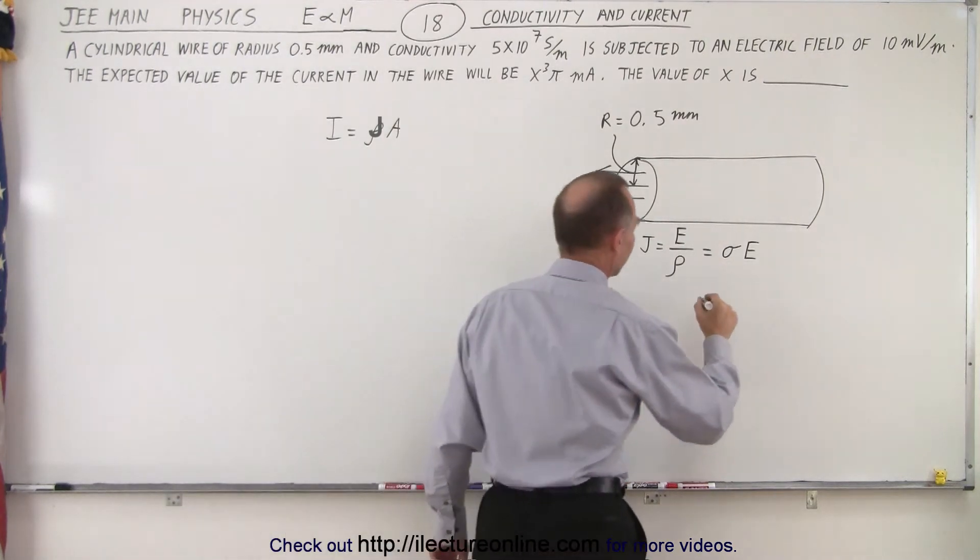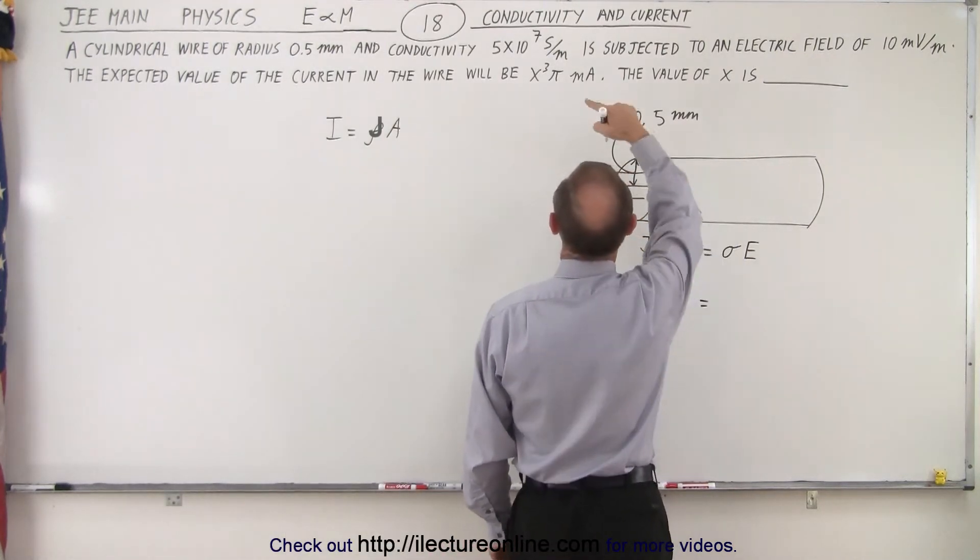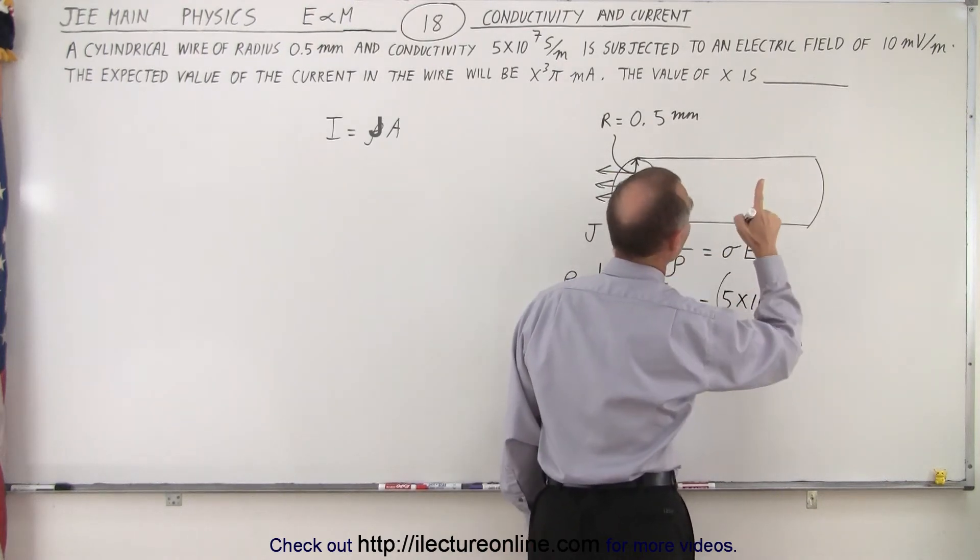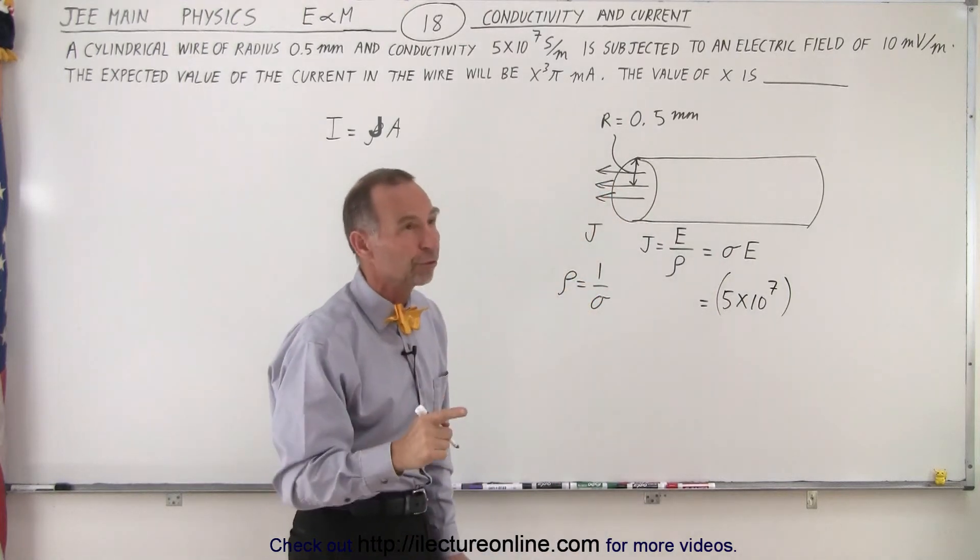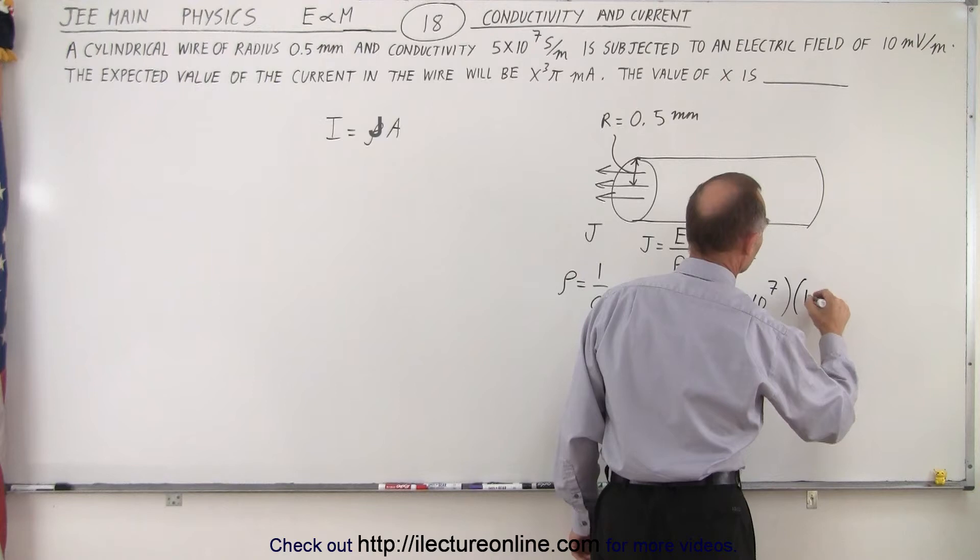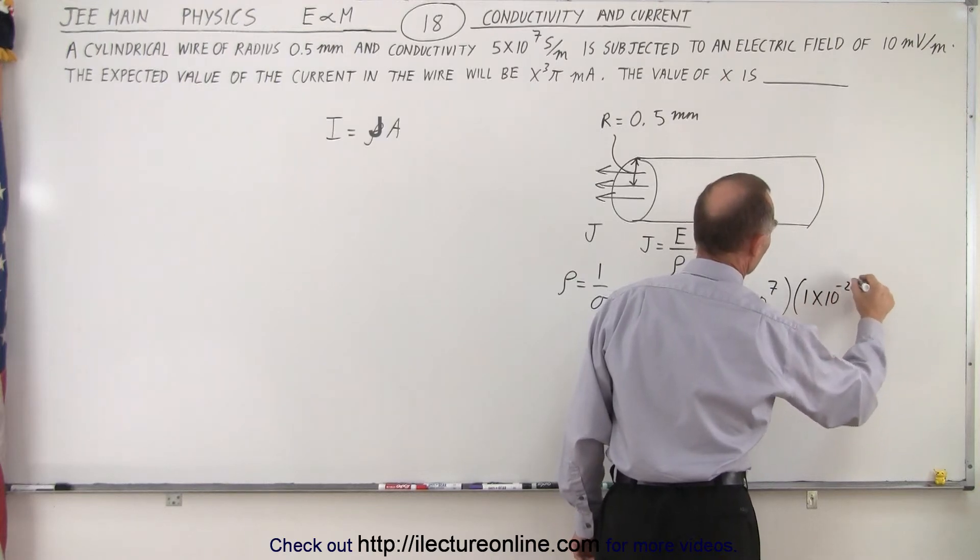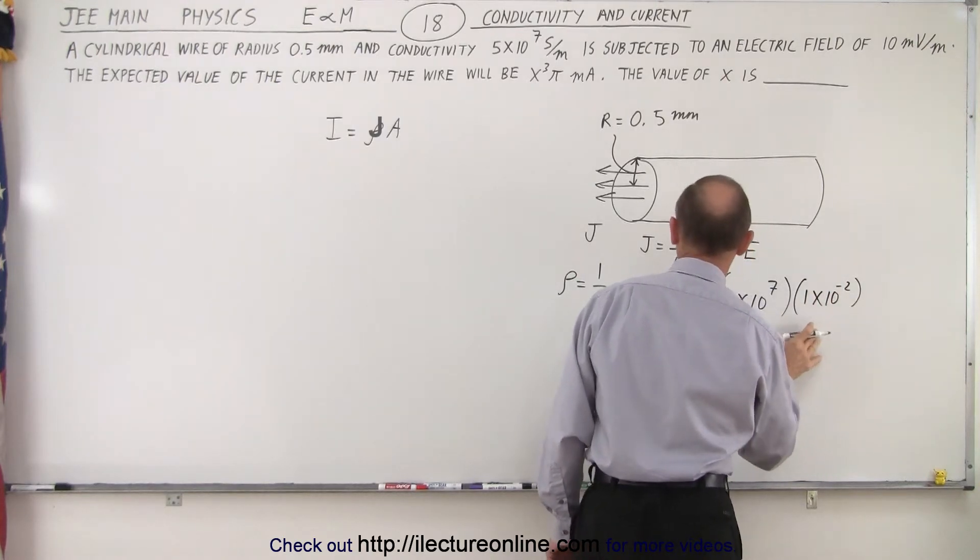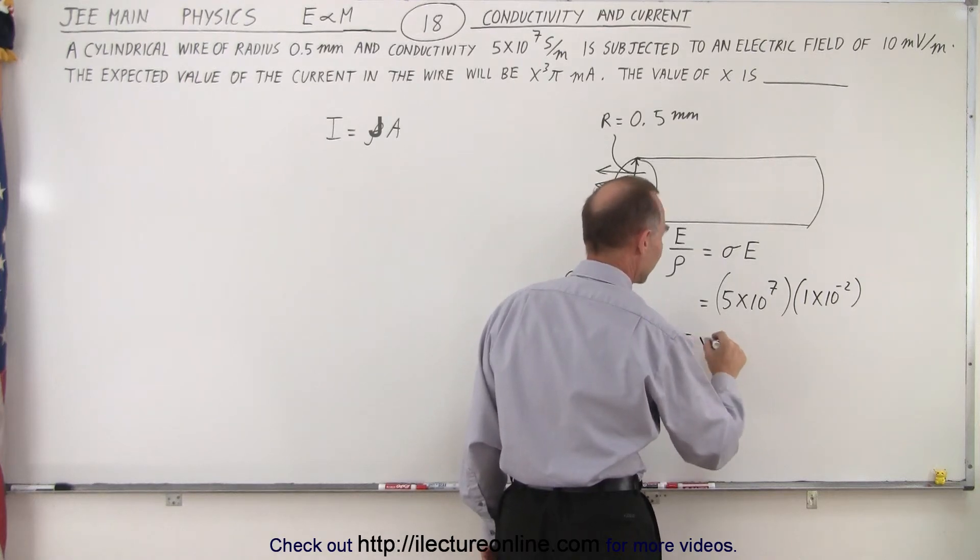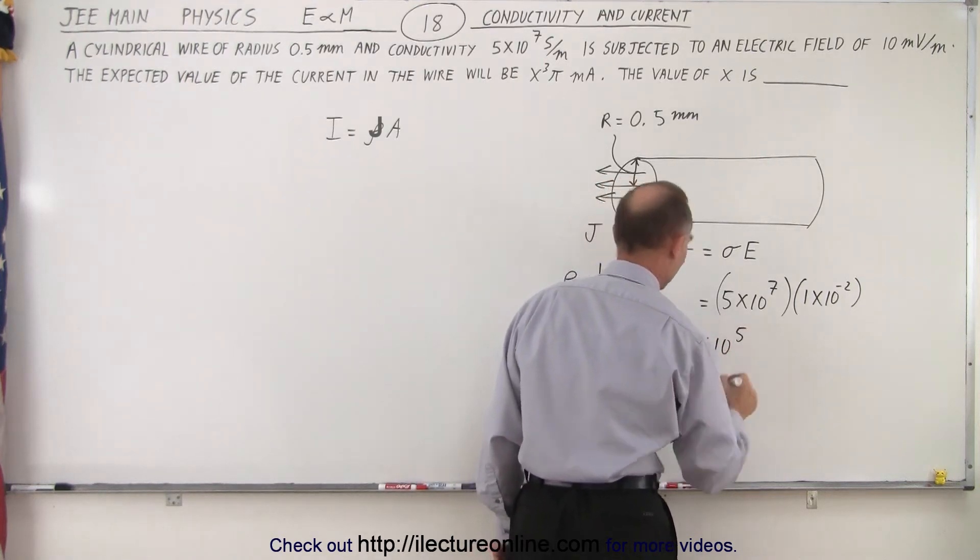So in this case, this is equal to the conductivity, which is 5 times 10 to the seventh, and the electric field strength is in millivolts per meter. So that would be 1 times 10 to the minus 2, because we want to convert it to volts, and that will give us the current density. So j is equal to 5 times 10 to the fifth power.